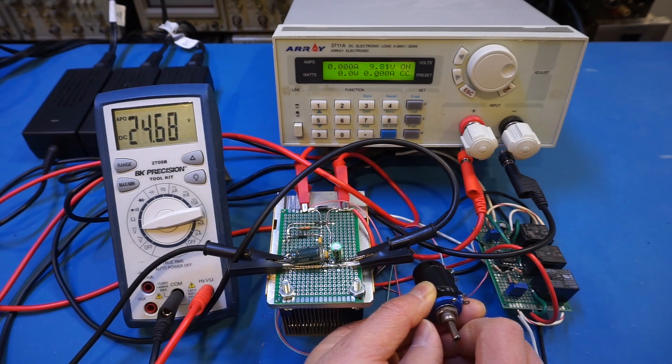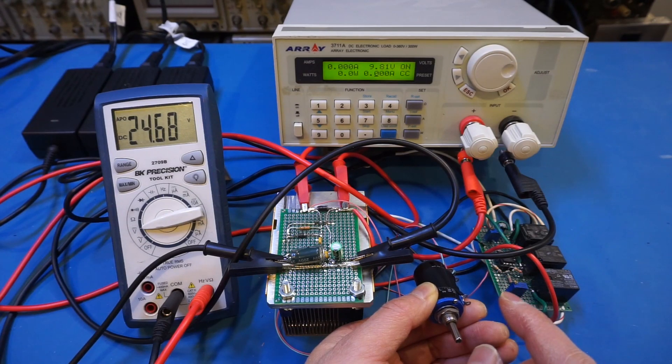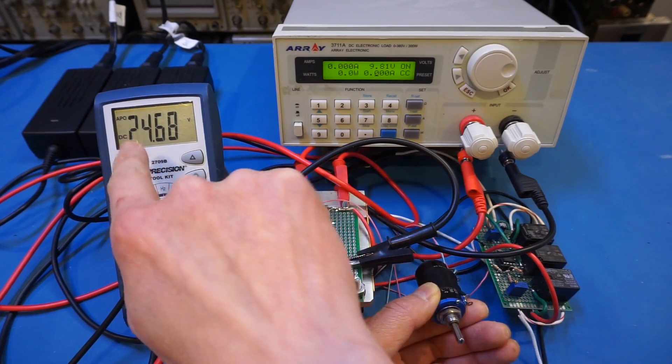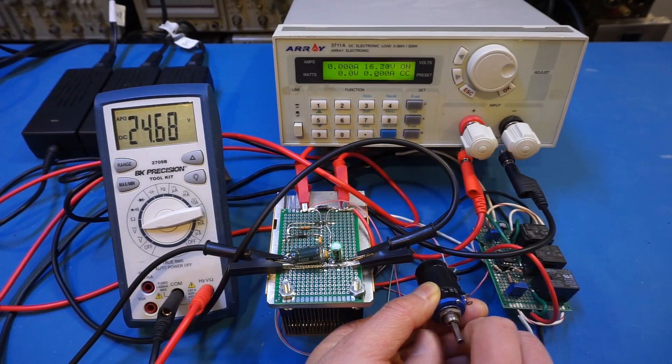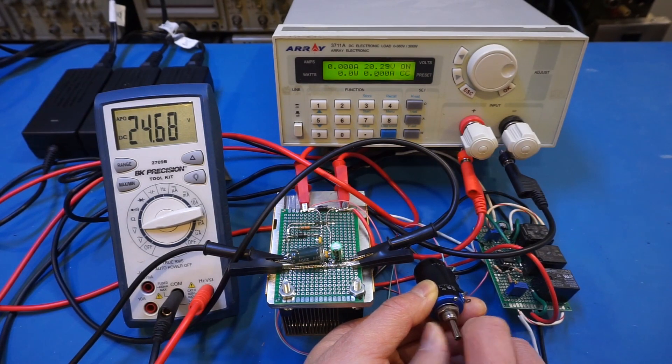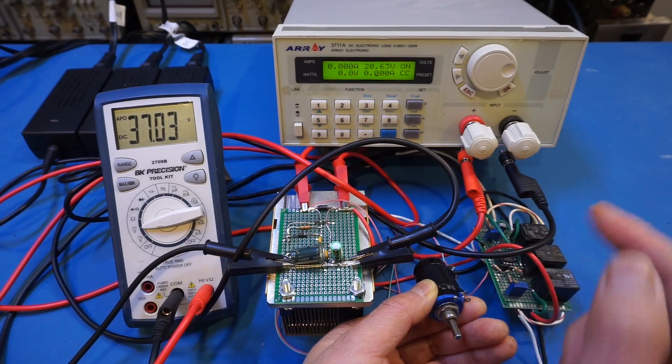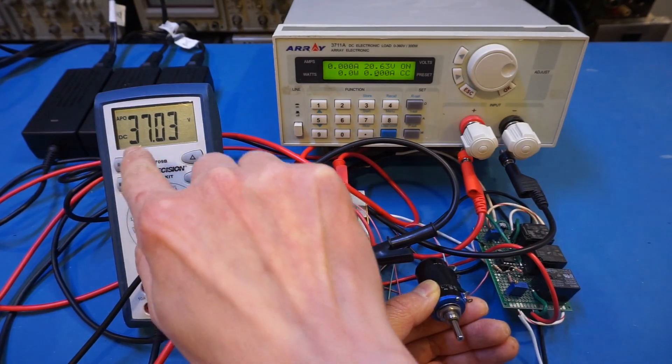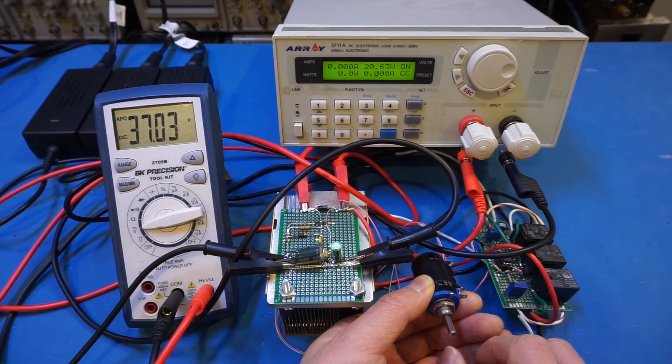So let's gradually increase and at right around 9.5 volts you heard the first click and the input switched from being in parallel to now being in series. And of course you see the 24.68 volts. So let's keep increasing. Again at roughly around 20.5 volts we saw that the input switched again so now we have three power bricks in series at 37 volts.